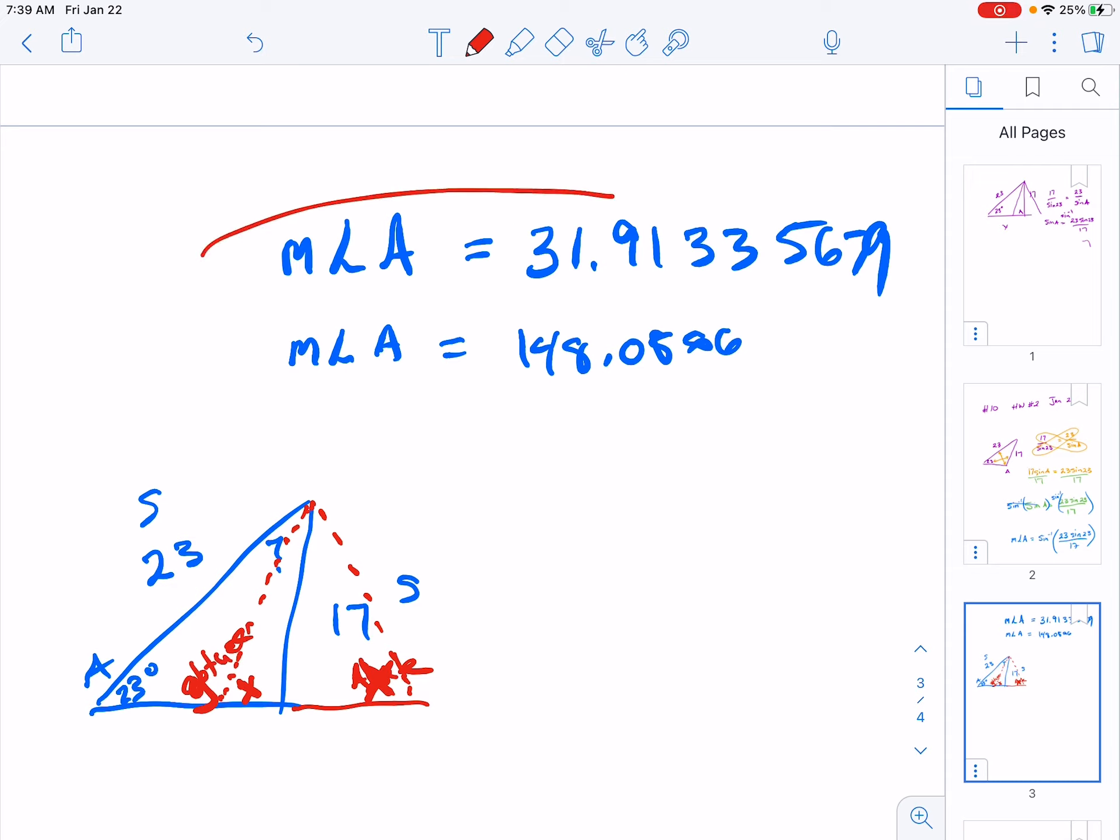So if I take the measurement, the 31.9 degree measurement, and subtract it from 180, I get the other possibility for this ambiguous case, which is 148.0866. And so that's what's happening here, it's the ambiguous case.